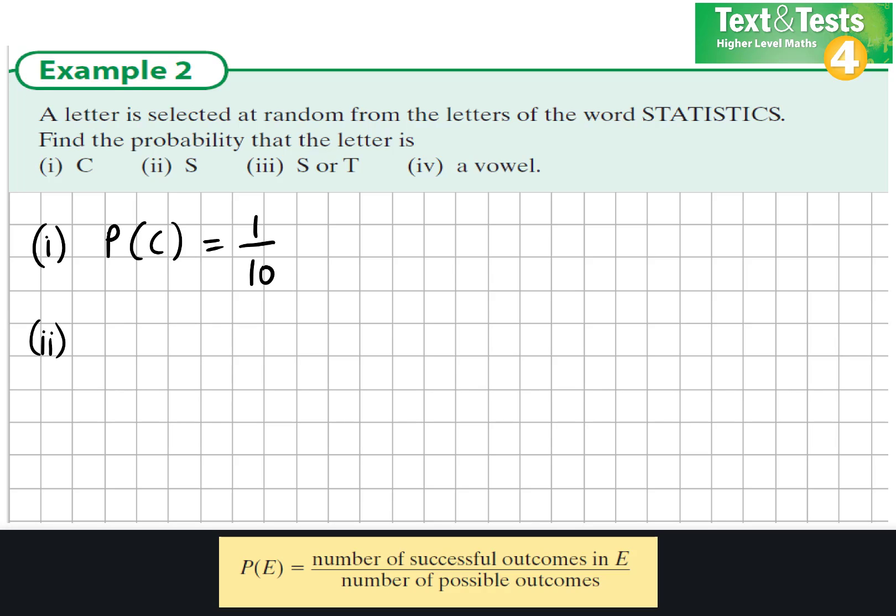Next, what is the probability it would be an S? We can see that in STATISTICS there are 3 S's. So there is a 3 out of 10 chance that it would be the letter S.